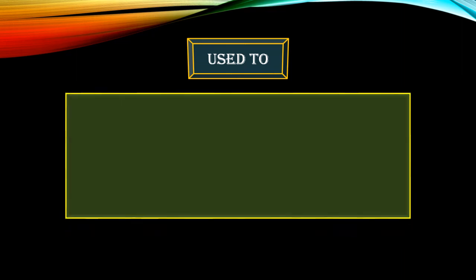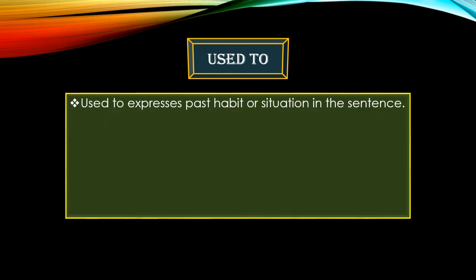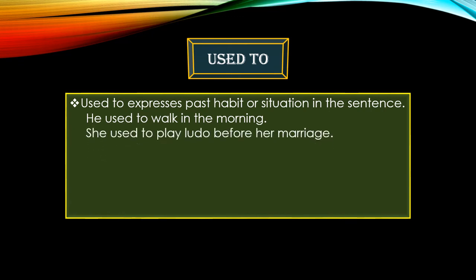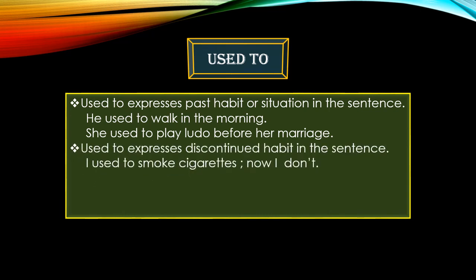Our next modal is 'used to,' which expresses past habit or situation in a sentence. To express past habitual action, we use 'used to.' For example: 'He used to walk in the morning' — this was his past habit, but now he doesn't. Another example: 'She used to play Ludo before her marriage' — she used to play when unmarried, but after marriage she doesn't.